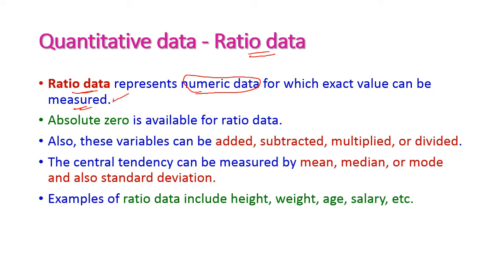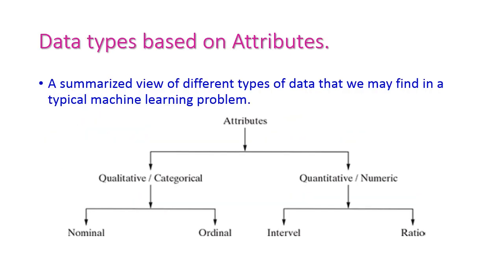Ratio data has an absolute zero, and we can perform all mathematical operations — addition, subtraction, multiplication, division — as well as all statistical operations like median, mean, mode, and standard deviation. Examples of ratio data include height, weight, age, and salary. To summarize: data is divided into qualitative (categorical) and quantitative (numerical). Qualitative data includes nominal and ordinal data; quantitative data includes interval and ratio data.